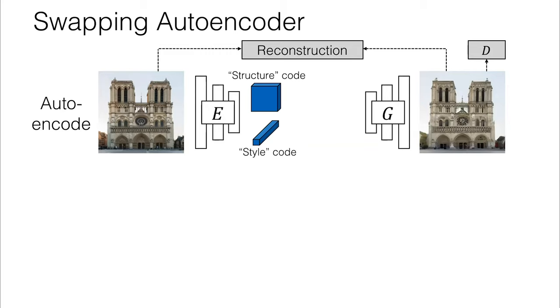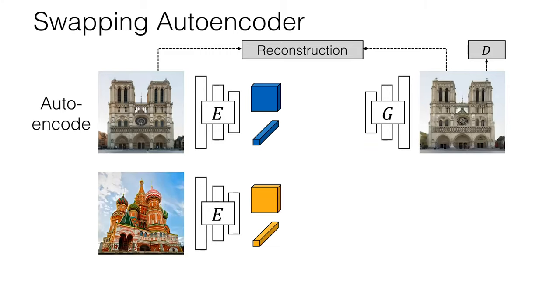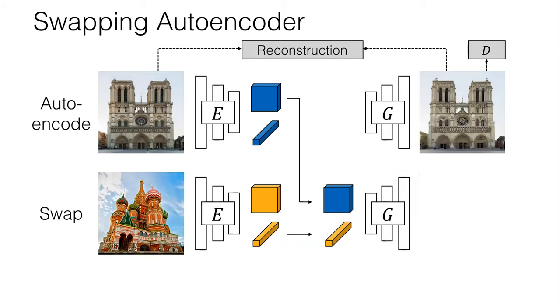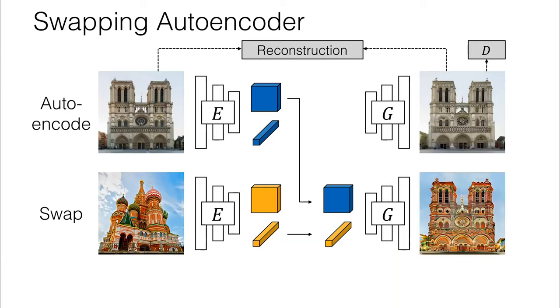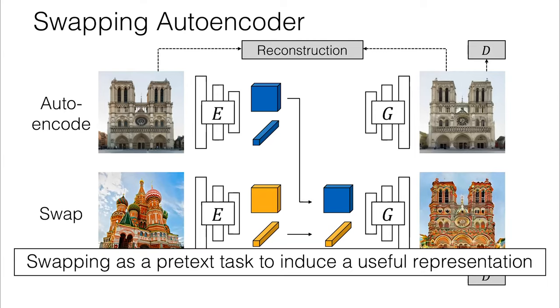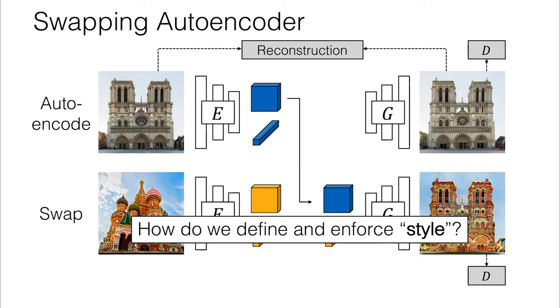Now how do we actually enforce that something corresponds to style? Well, one thing we can do is swapping. We can encode a different image, in this case St. Basil's Cathedral. We can attach its style code to the structure code of Notre Dame and decode it and hopefully get something like this. We want that to look realistic, so we'll put a discriminator there. The idea here is that we're using swapping as a pretext task, and that should hopefully induce a representation that's useful later. Now, how do we actually enforce this? Number one, we have to define what we mean by style, and number two, we have to figure out how to actually enforce this.